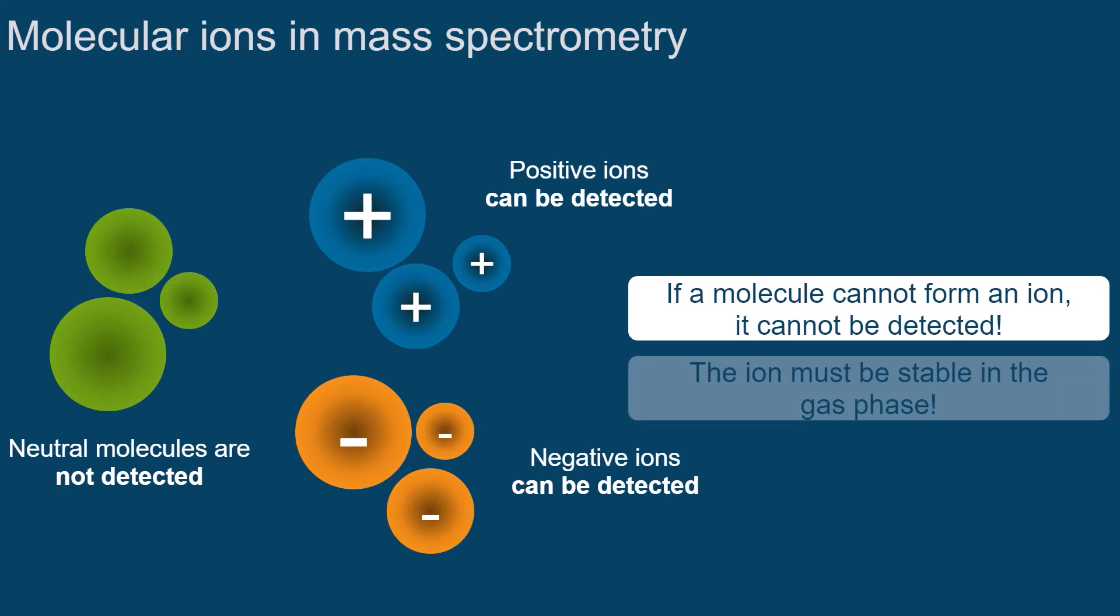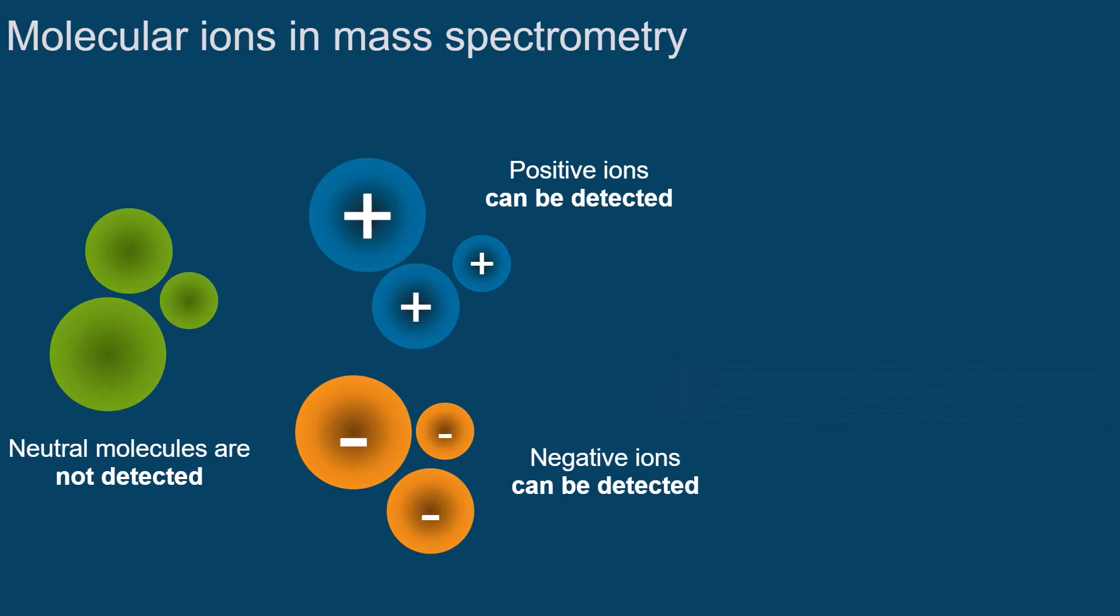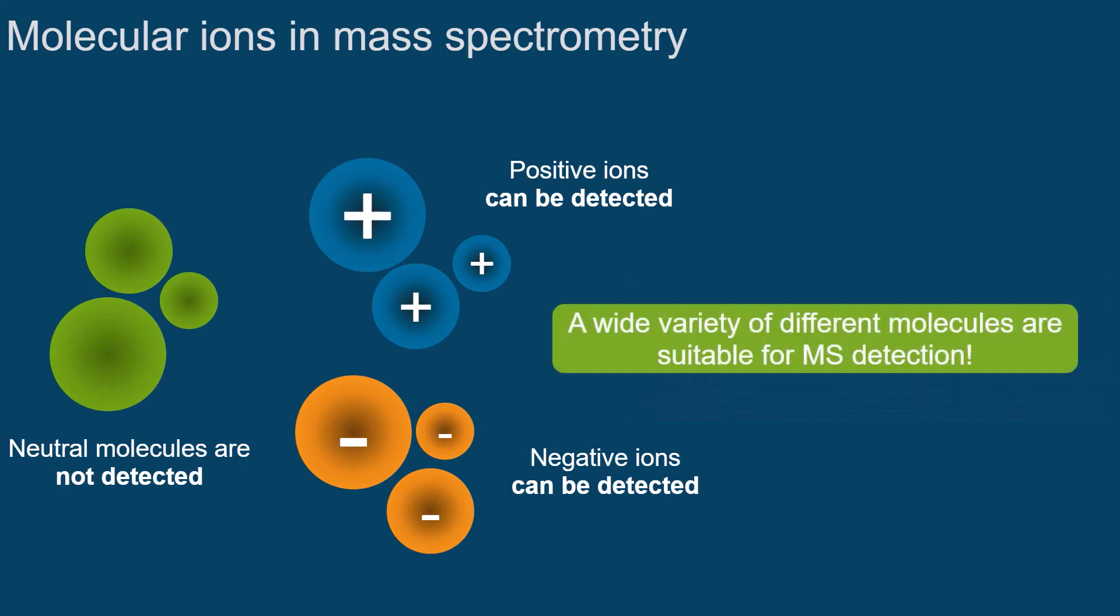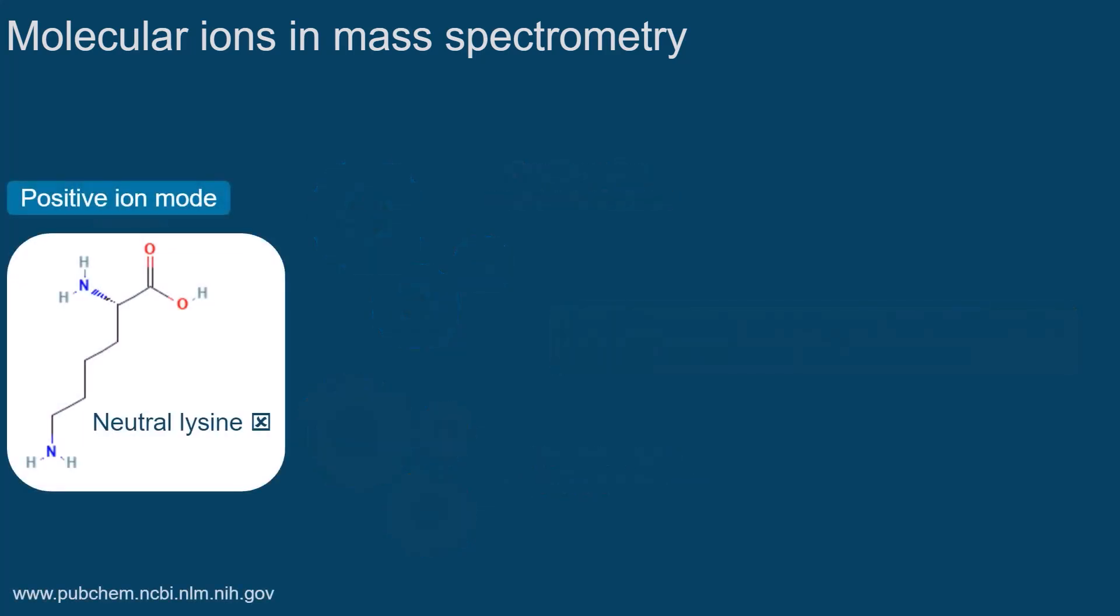In addition, the ions must be stable in the gas phase. Fortunately, a wide variety of different molecules can form either positively or negatively charged ions that can be detected in the gas phase.